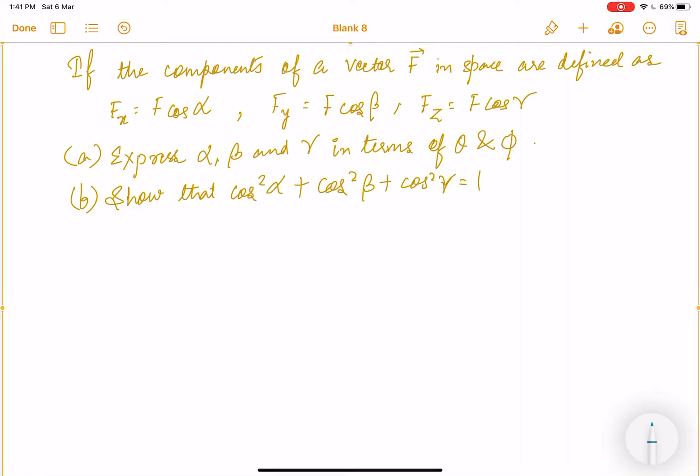Hello everyone, let's solve this question. If the components of a vector f in space are defined as f_x equals f cos alpha, f_y equals f cos beta, and f_z equals f cos gamma, then express alpha, beta, and gamma in terms of theta and phi.